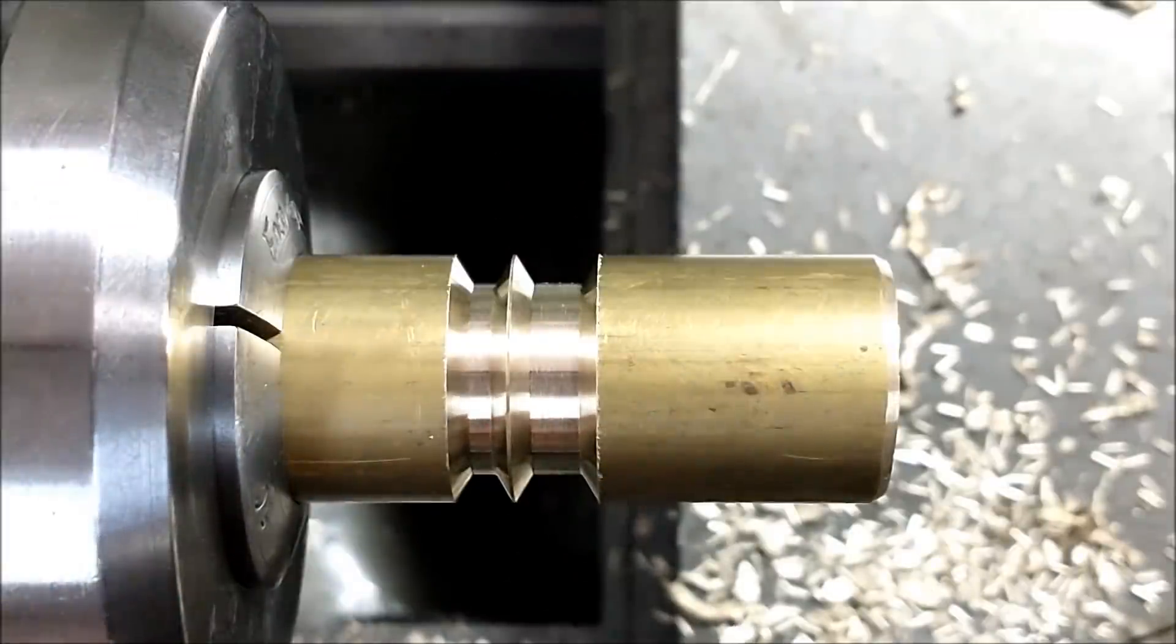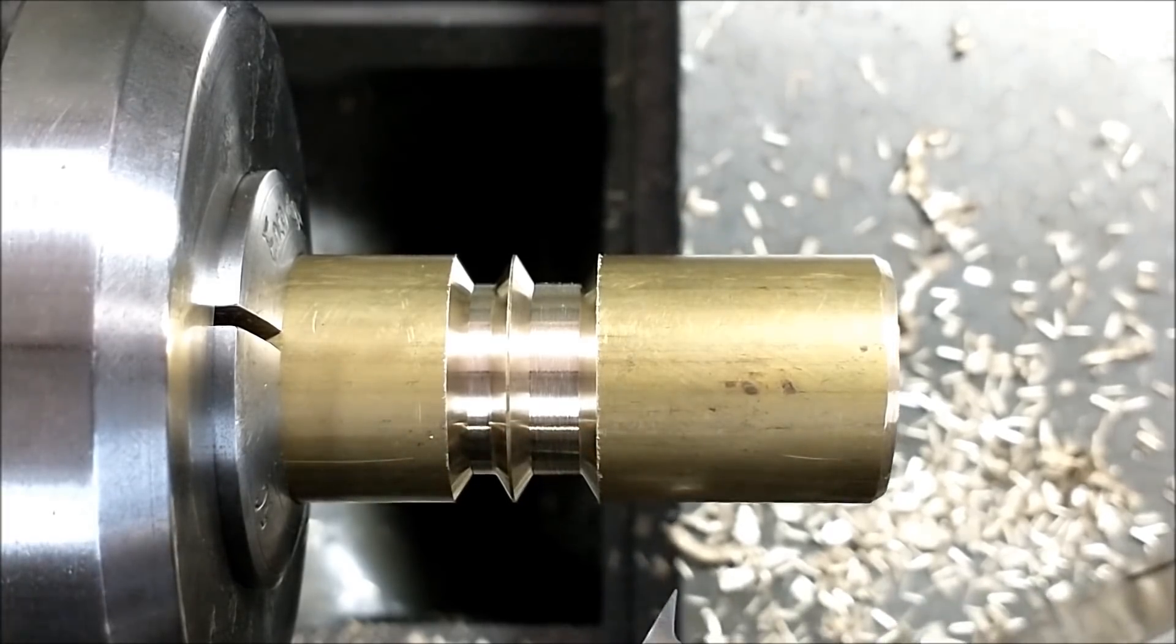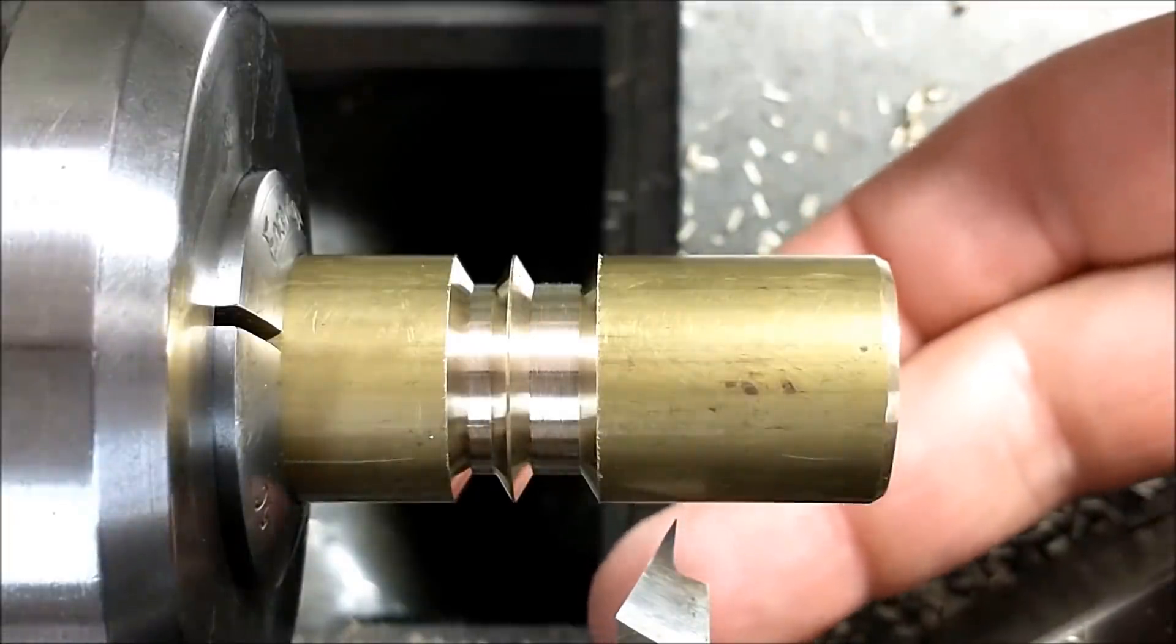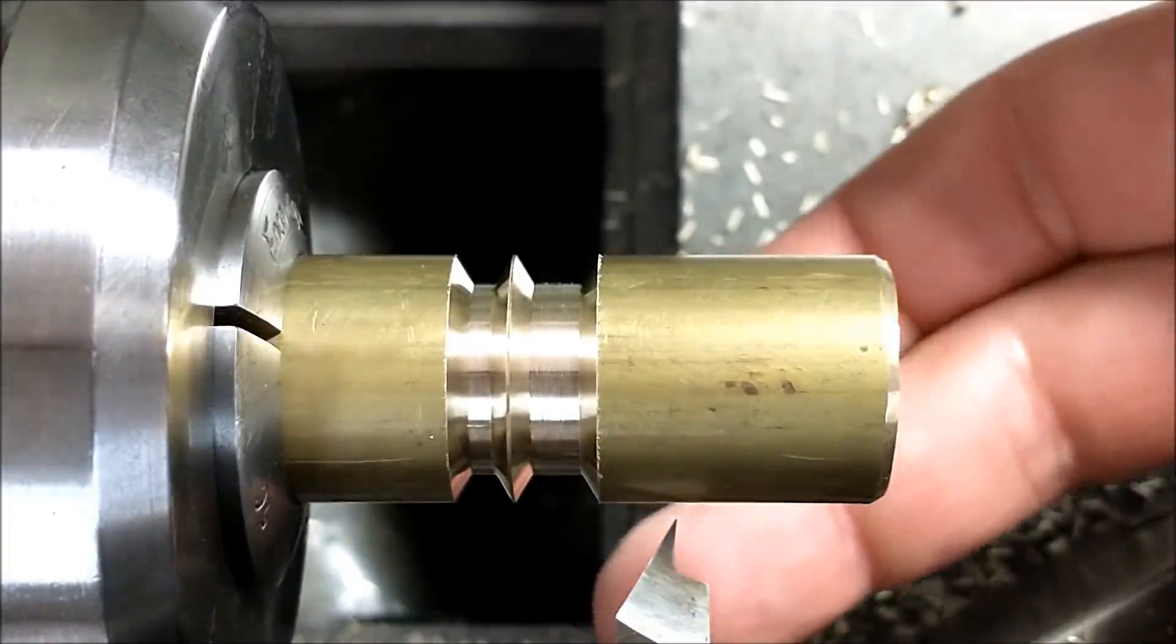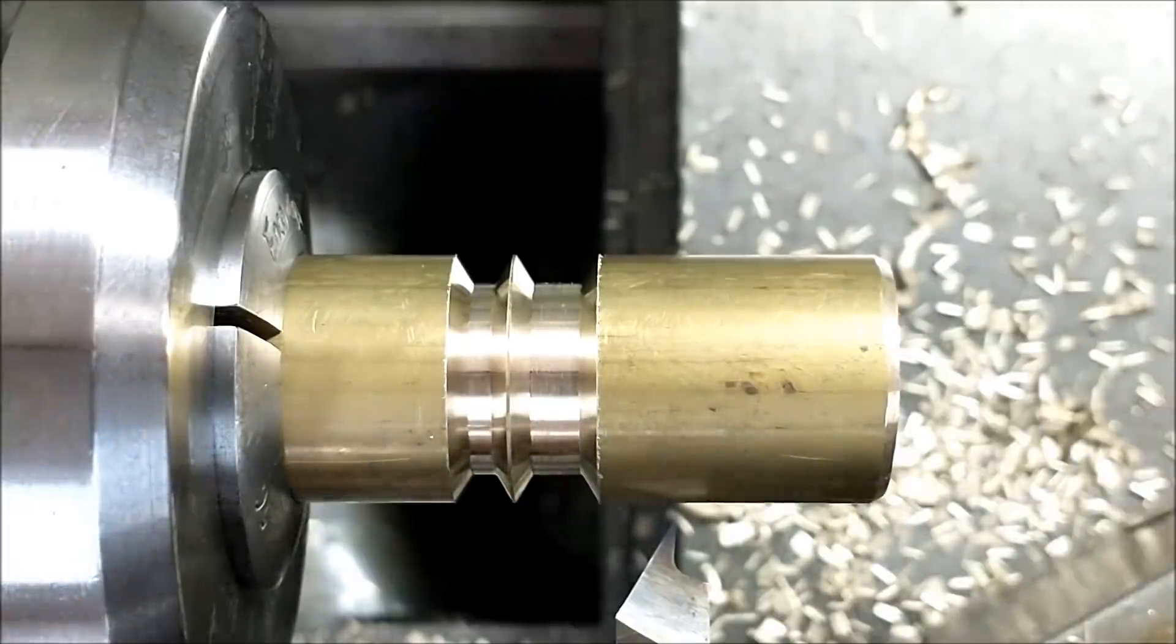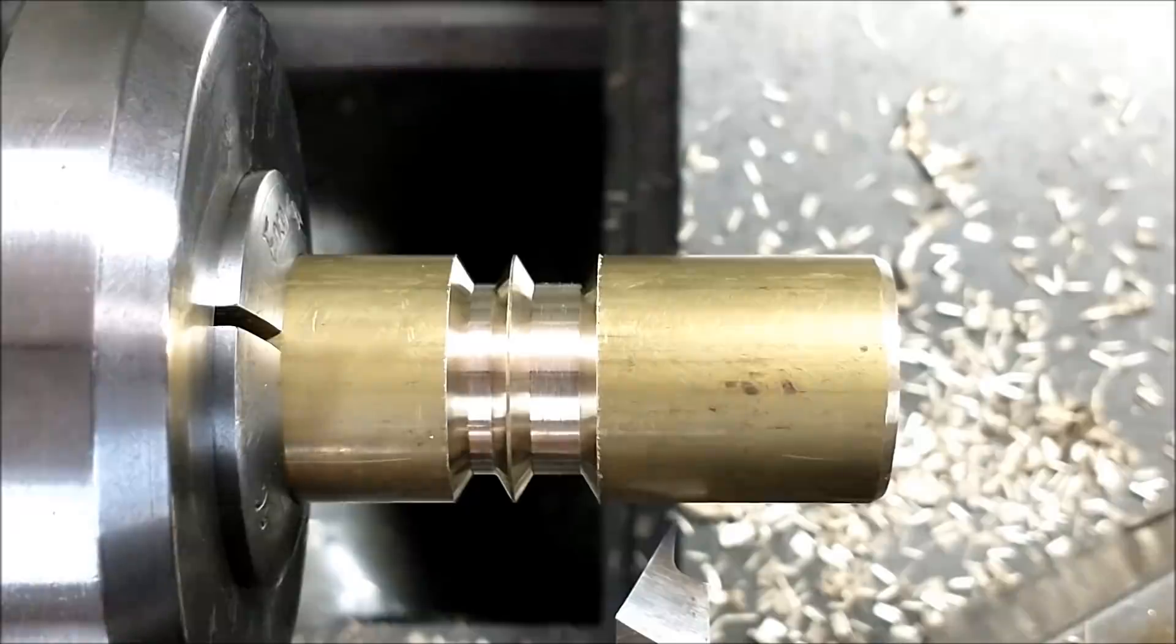This is a seriously ugly hand ground high speed steel tool. There you go. 30 degrees on one side, about negative five on the other side. What happens if you plunge it straight in? Well, you're going to get a straight side on one side and 30 degrees on the other side. Let's do it.